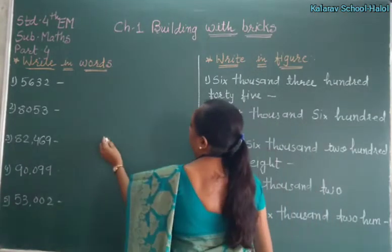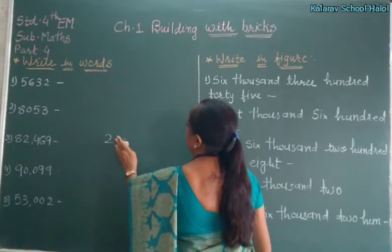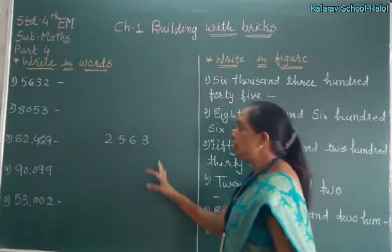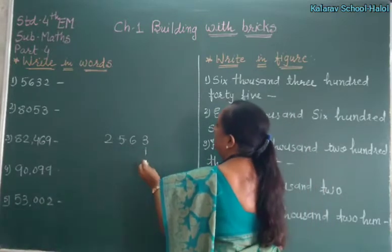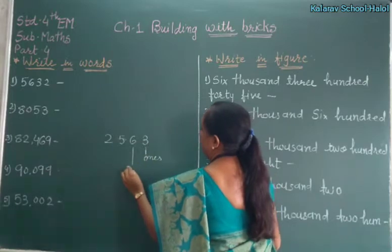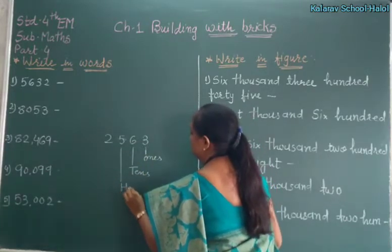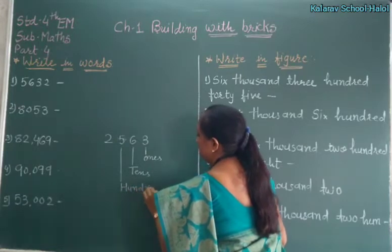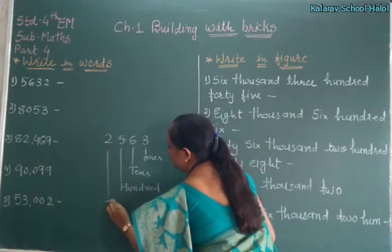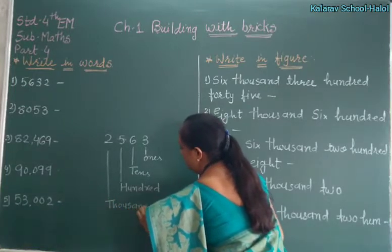First of all, any number — 2, 5, 6, 3. So here, 3 is in which place? Ones. Tens, hundreds, and 2 is in the thousands place. Right?